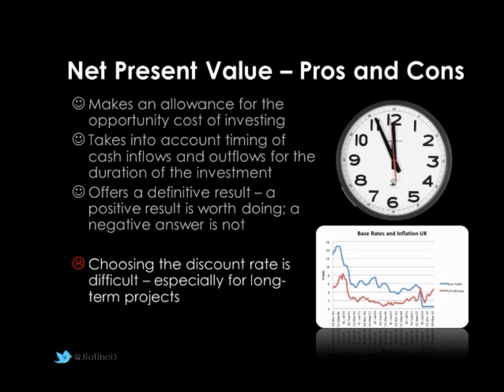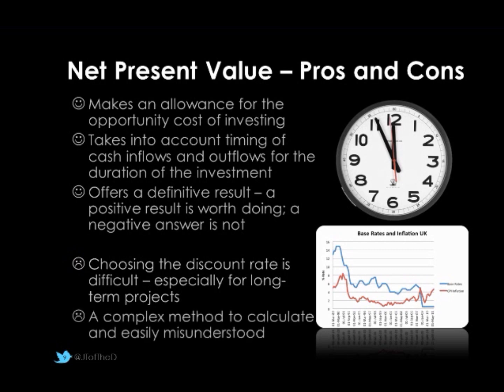Disadvantages? Well, choosing discount rates is particularly difficult. We've said 10%, but how do we know it's going to be 10% for 5 years? Bank rates move around. In reality, businesses do employ accountants and take into account different rates at different points. The image on the right shows the Bank of England's interest rates over 22 years — you can see just how dramatic they are. Projects may take longer than 5 years, so realistically, how difficult would it actually be to calculate this?